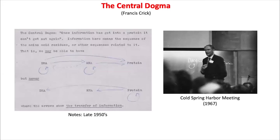The history of the central dogma goes all the way back to the 1950s. The person you see on the right-hand side is Francis Crick, giving a lecture in 1967 at a university called Cold Spring Harbor Laboratory, or CSHL. In this meeting, as you can see on the blackboard behind him, he's drawing a simple schematic which today we know as the central dogma.